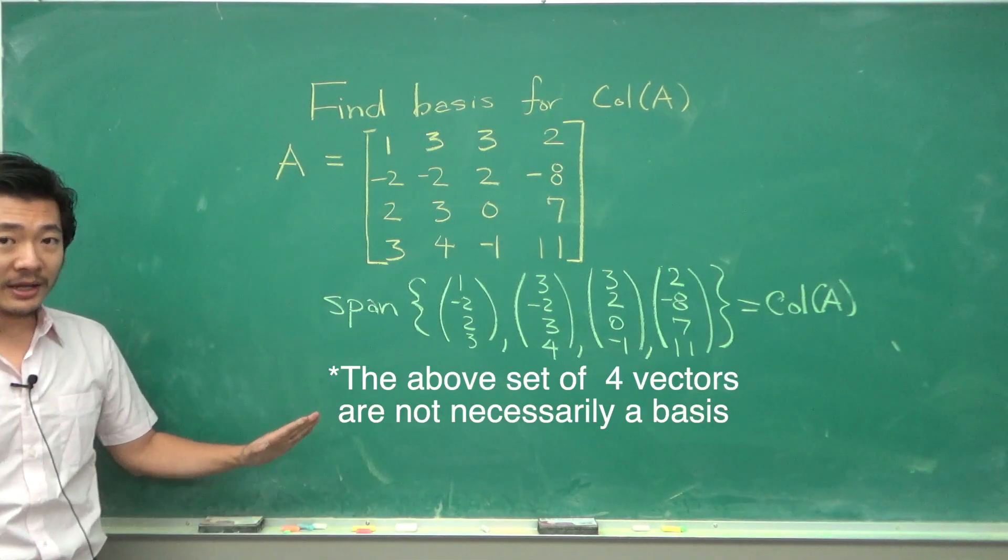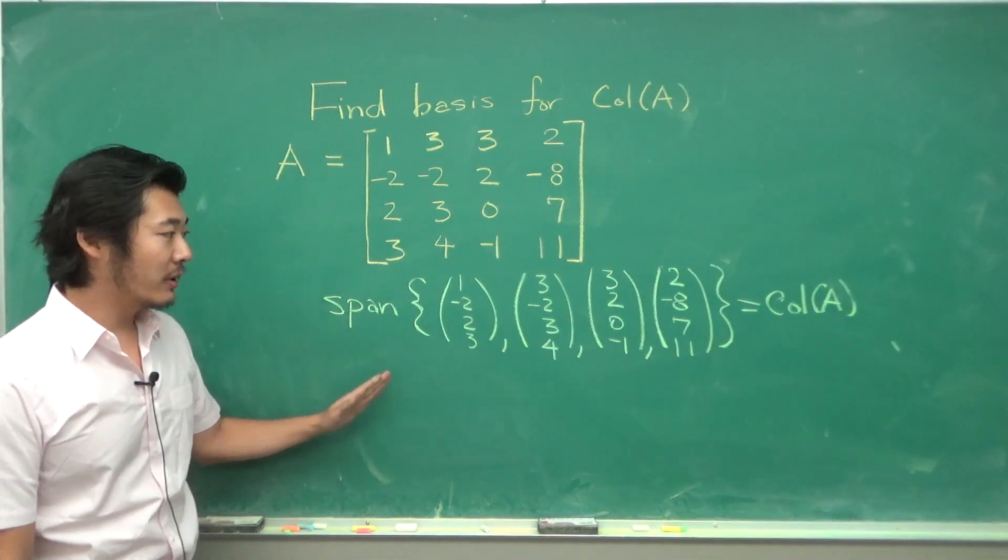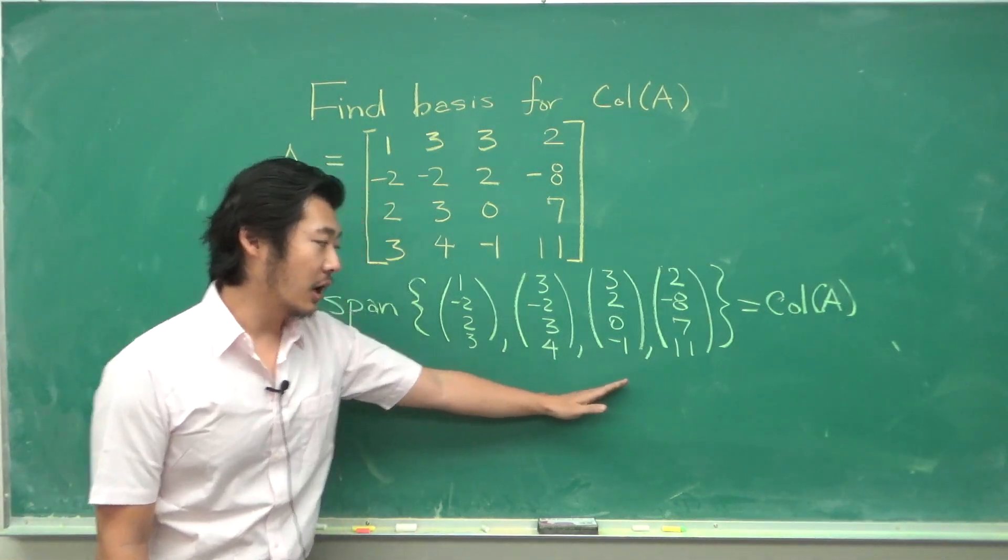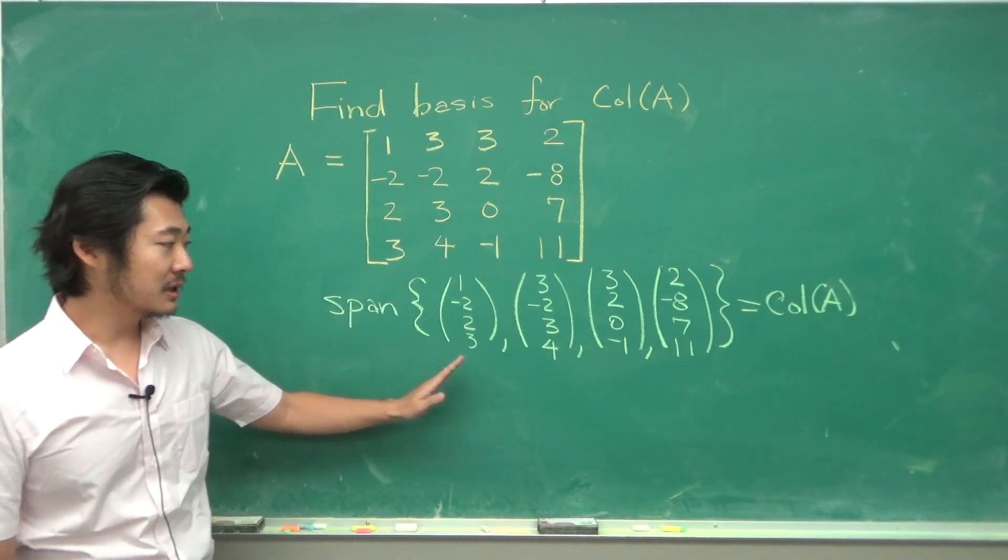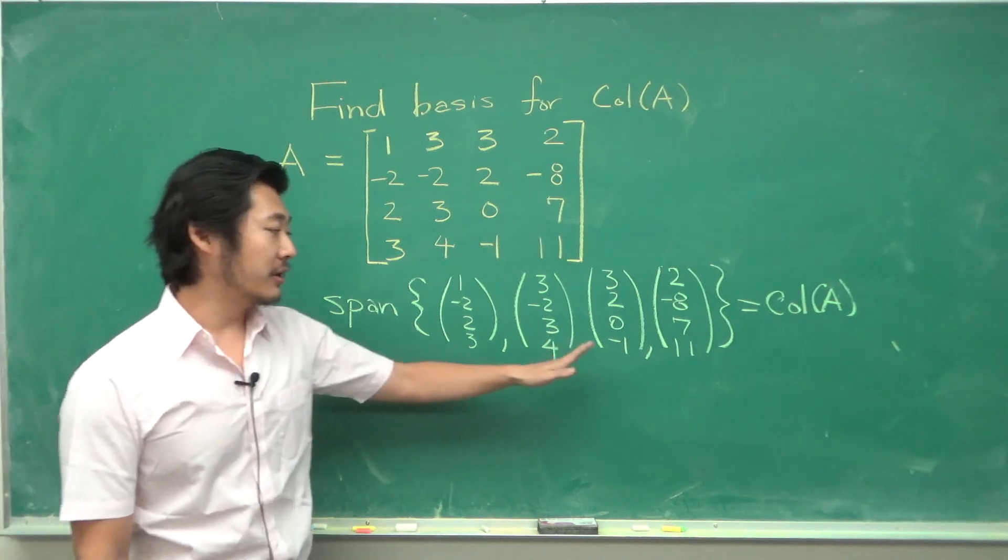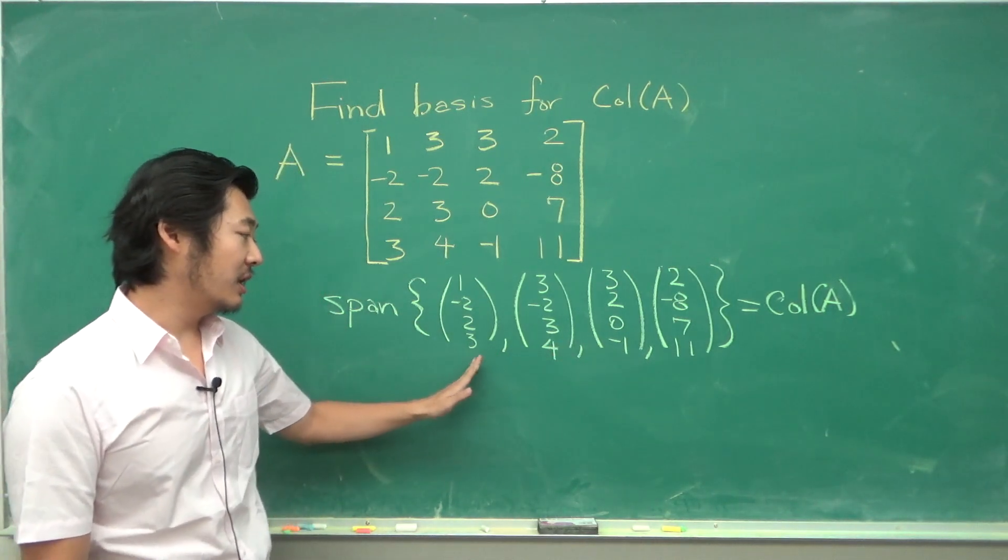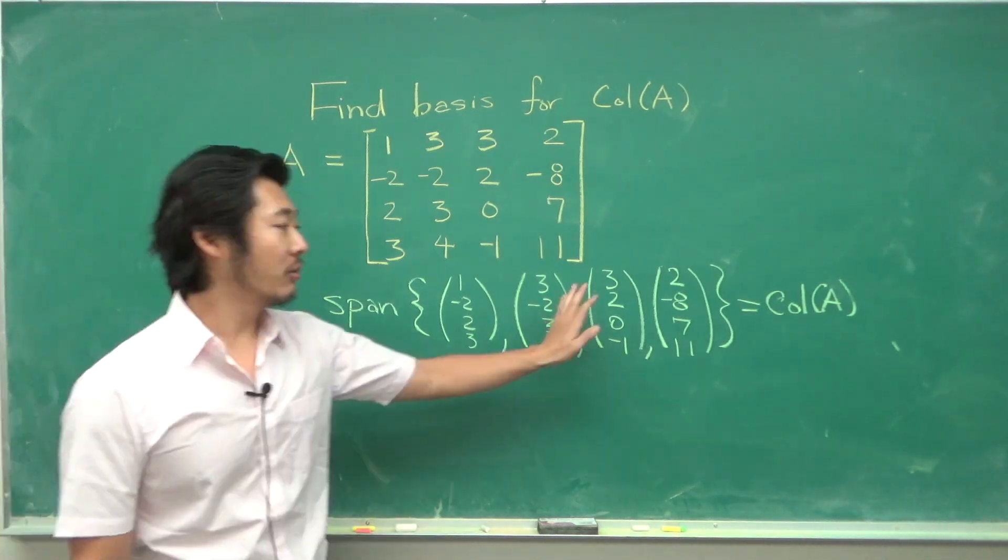It's not necessarily a basis because for it to be a basis you also require that these vectors are linearly independent. So what that means is some of these vectors in here may be redundant. Maybe you can write this vector as a linear combination of these two vectors. Then you would describe the same set without that vector.